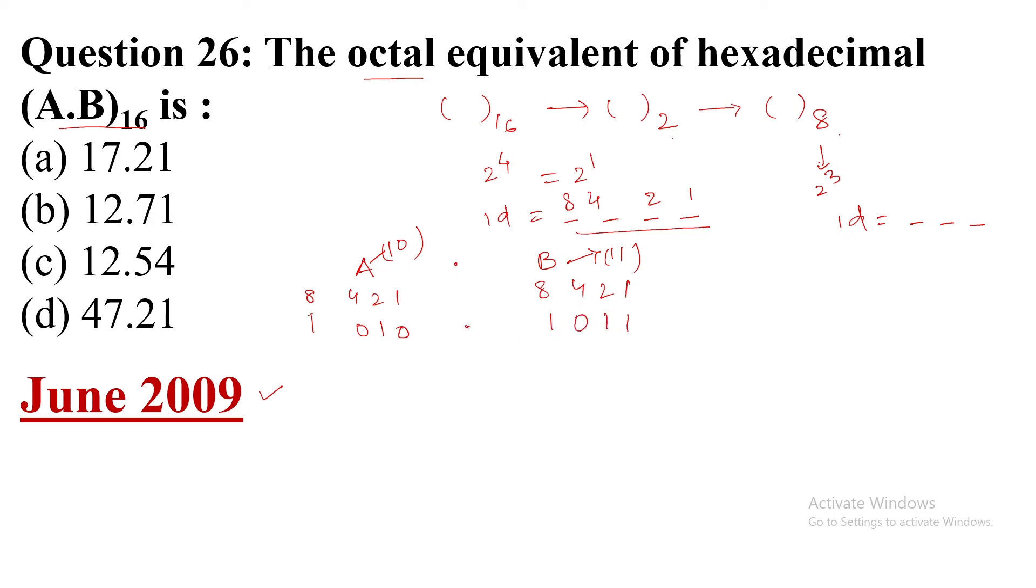Now convert to octal. Whenever we convert to octal, from the LSB take three bits. This three, and this one is left, so put two more zeros. After the decimals we will take from left to right, and this one is left, again put two zeros to make three bits.